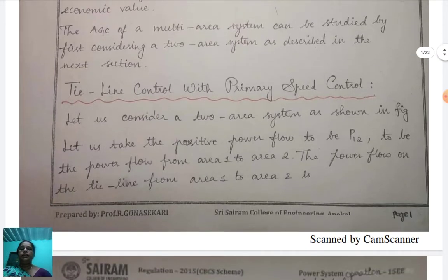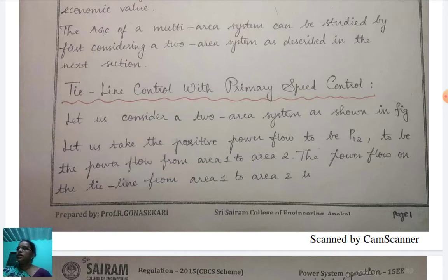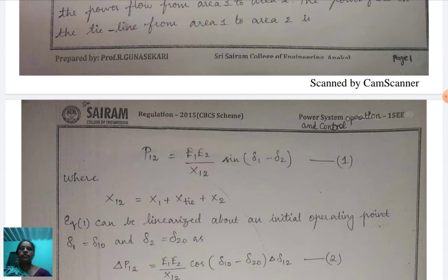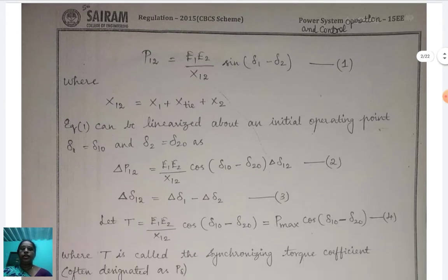The first topic is Tie Line Control with Primary Speed Control. Under this topic, we study the change of load in area 1, change of load in area 2, and change of load in both areas. First, we study P12, which is the power interchange from area 1 to area 2. That is equal to (E1 × E2) / X12 × sin(δ1 − δ2), where X12 = X1 + X_tie + X2.